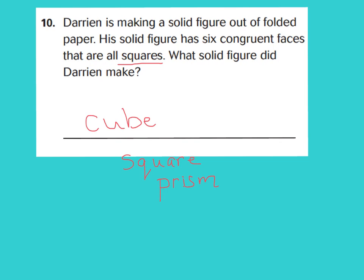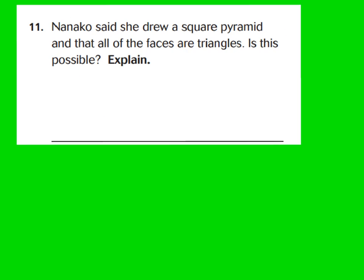For question 11: Nanako said she drew a square pyramid and that all of the faces are triangles. Is this possible? The answer is no. The reason is that the base is a square, and the definition of a face is any flat surface on a solid figure. So technically it has four triangle faces, but it also has a square base on the bottom, which is a flat surface. Therefore, not all of the faces are triangles — only four of them are triangles; one is a square.